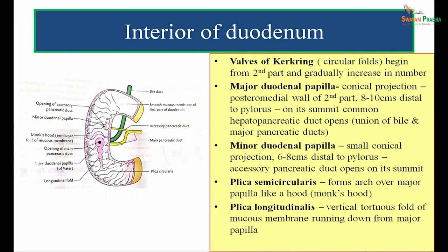The major duodenal papilla appears as a conical projection on the posteromedial wall of the second part of the duodenum, at a site 8 to 10 centimeters distal to the pyloric orifice. On the summit of this papilla is the opening of the common hepatopancreatic duct, formed by the union of the bile duct and the major pancreatic duct. There is also the minor duodenal papilla, another small conical projection lying 6 to 8 centimeters distal to the pylorus, where the accessory pancreatic duct opens.